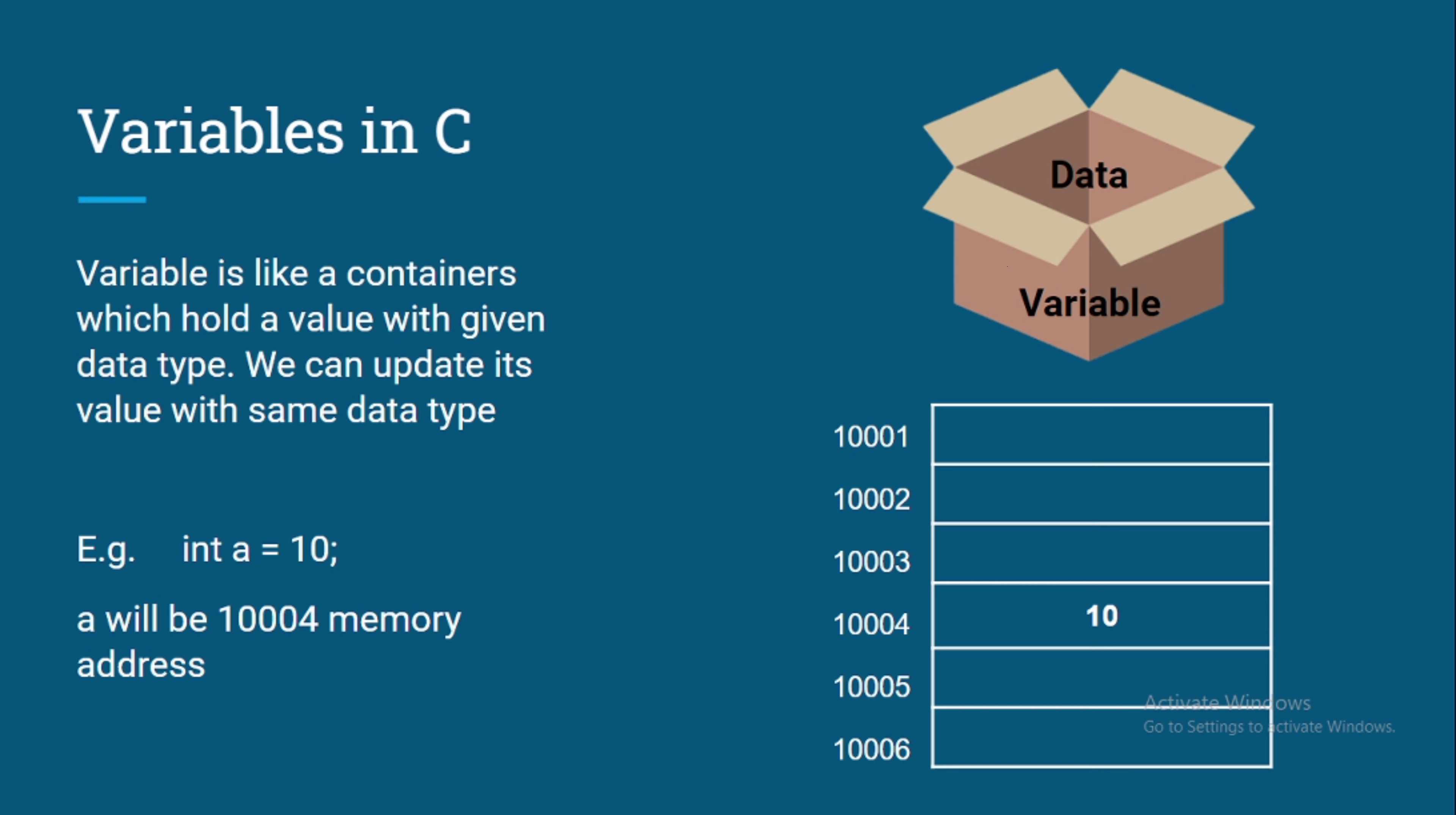We can store 10, 20. Integer means numerical value without decimal points. So 10, 20, 50, 30, any kind of value we can store. Negative or positive both values. So right now we are adding int a = 10. Now how it will store to our memory?